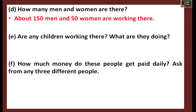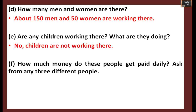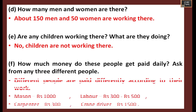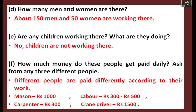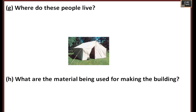How many men and women are there? For a big construction site, expect around 150 men and 50 women; for a small one, about 50 men and 20 women. Are there any children working? No, children are not working there. How much money are people paid daily? A mason gets around rupees 1000; a labourer 300 to 500; a carpenter around 300; and a crane driver around 1500.